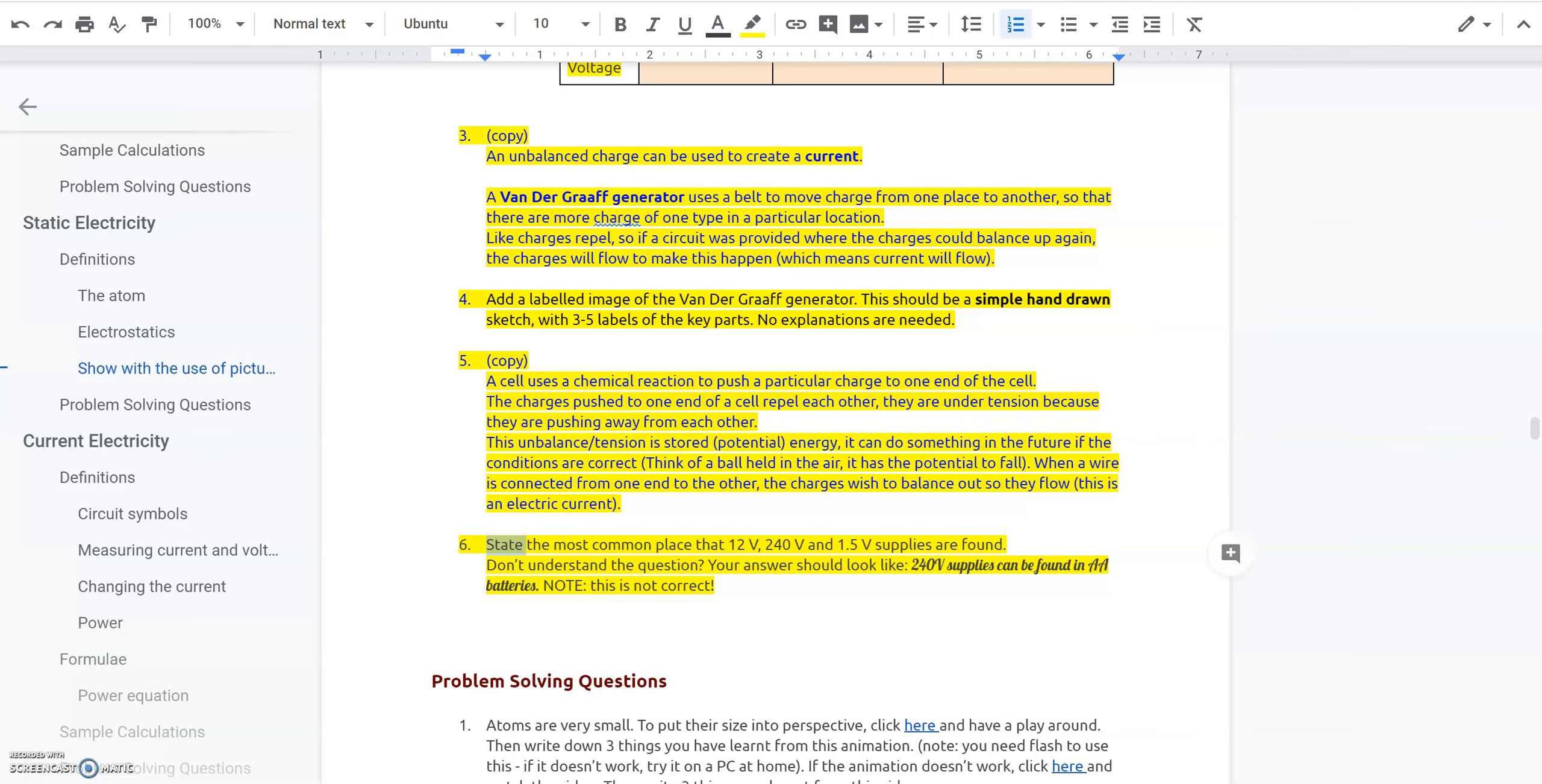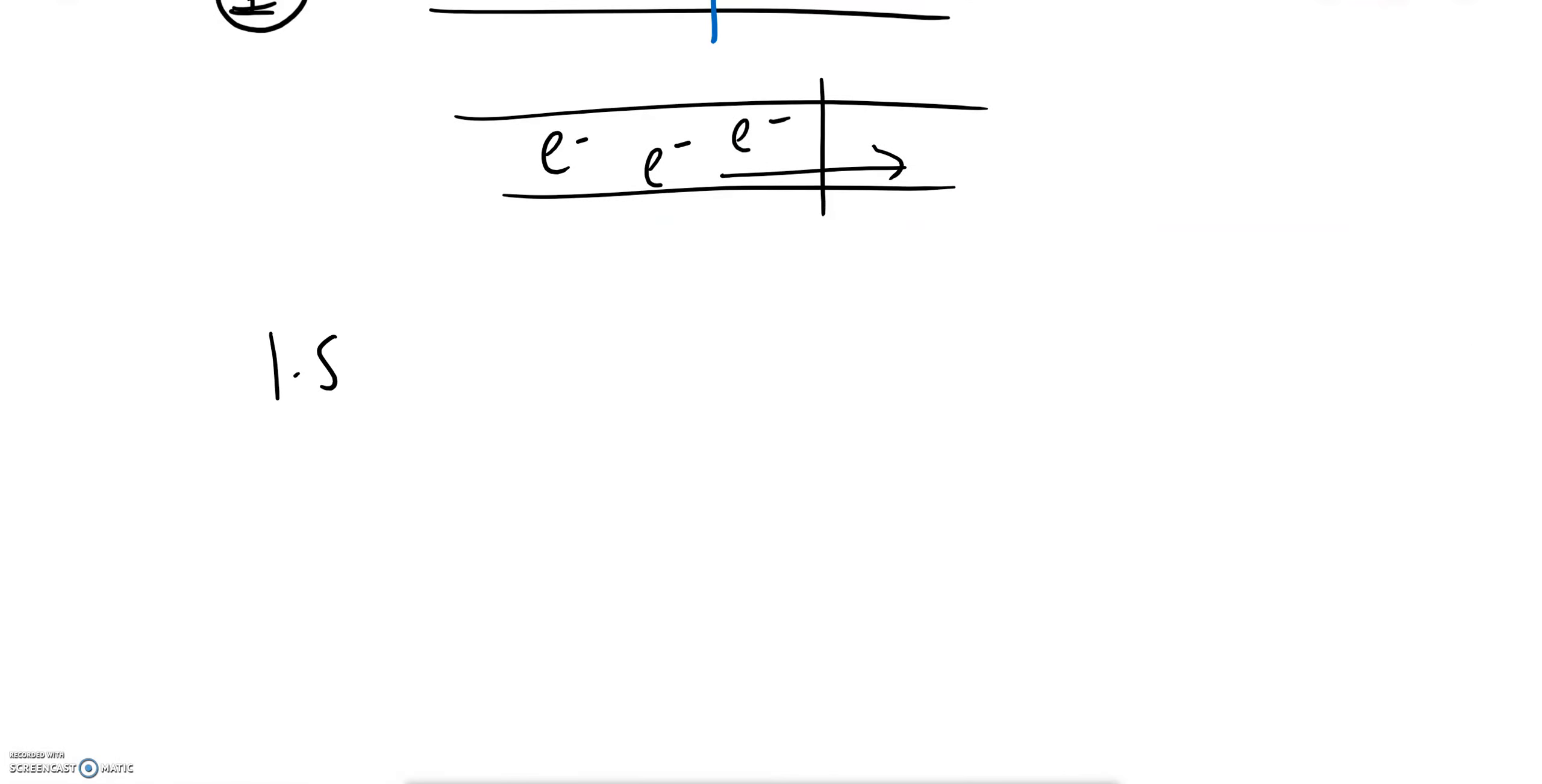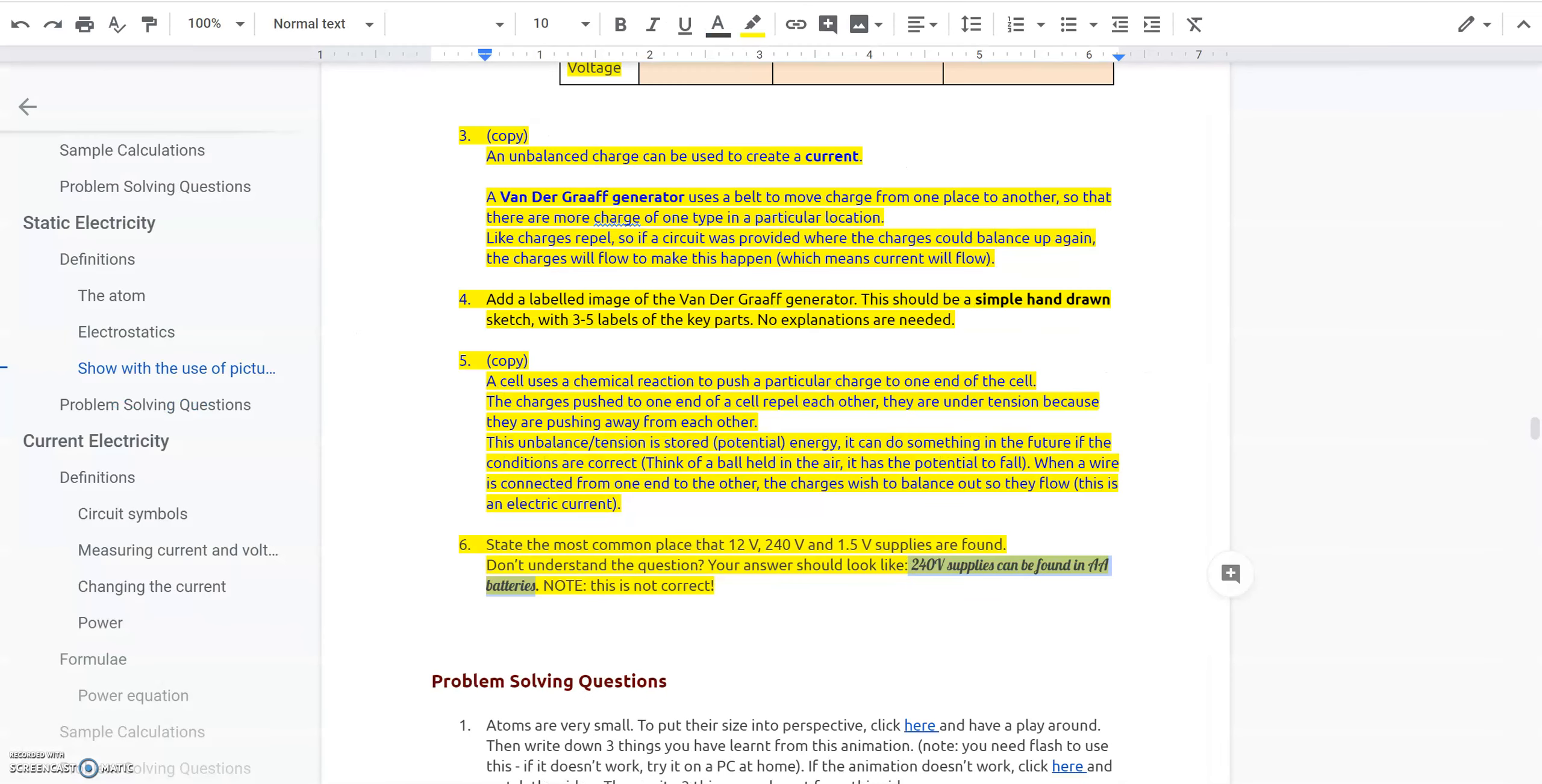And then you need to do a bit of research. State the most common place that you'd find 12 volts, 240 volts, and 1.5 volt supplies. An example has been done for you. For example here it's saying that 240 volt supply can be found in AA batteries, well that's not correct so don't copy that down, but that's the sort of sentence I want to see in your book. So for example you might write down 1.5 volt batteries or supplies sorry can be found, and then have a look, see if you can have a look on the internet and see if you can find where that exists. 240 volts is very important, okay, use that every day. See if you can find out where that comes from as well.